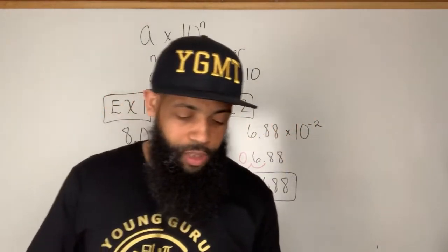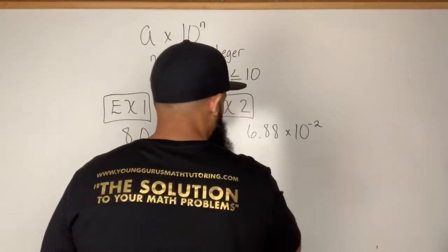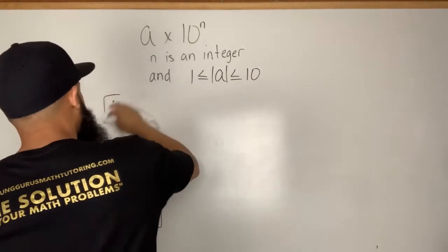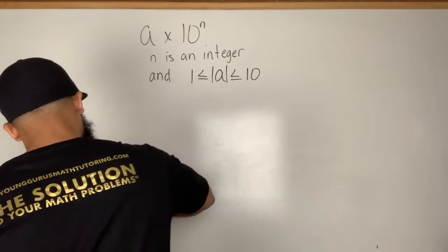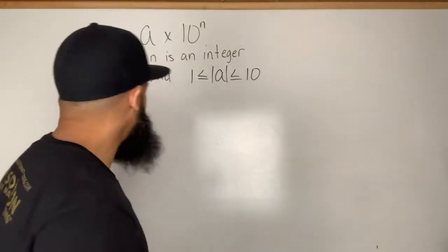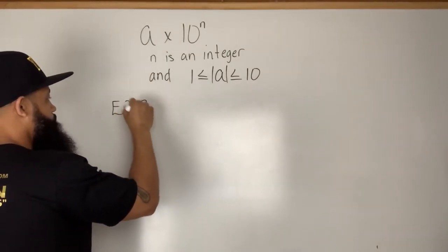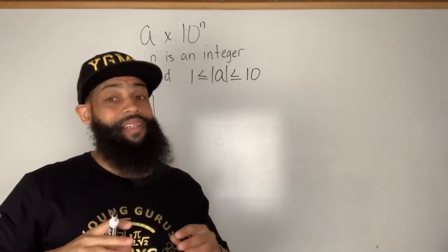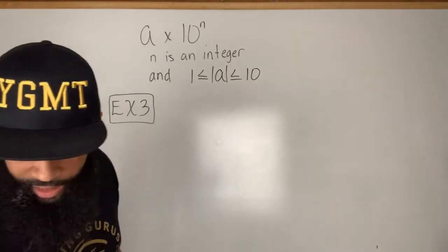Now the next couple of examples I'm going to show you how to do the same thing, but we're going to be talking about converting from scientific notation to standard form when we have positive exponents. Remember, positive exponents represent a very large number. We always want to think about value — a lot of students can identify digits but need to understand the value of a number.